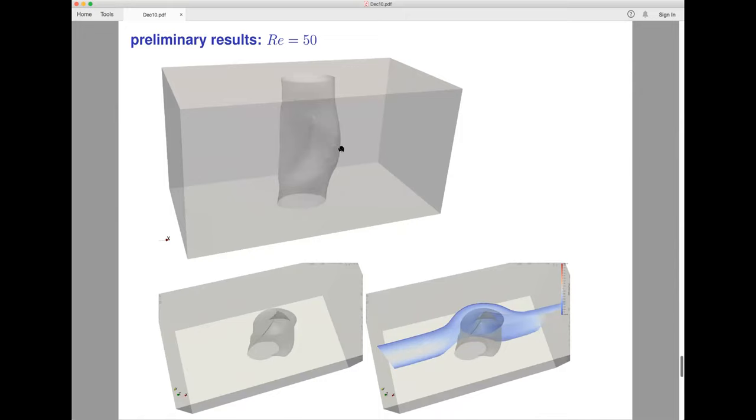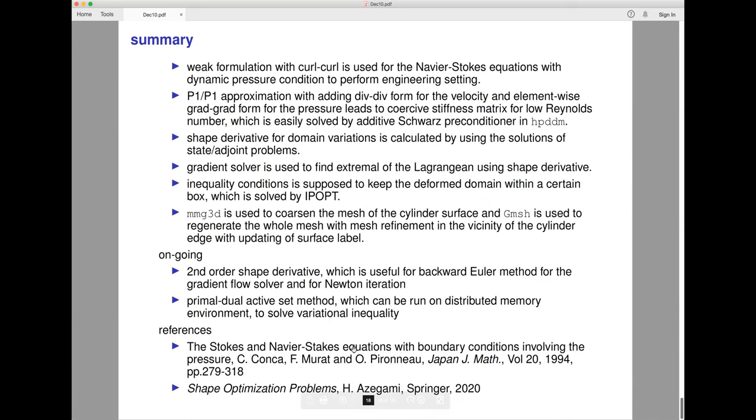This is my presentation. The references: the first one is to understand what is dynamic pressure and how to treat the dynamic pressure in weak formulation. The next one is a new book from Professor Zegami, who is an expert in shape optimization in Japan. Now I'm working on the second derivative of the shape derivative, which can be useful for the backward Euler method for the gradient or the stationary solution, which can be useful to find the optimal shape. Thank you for your attention.